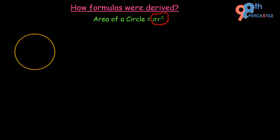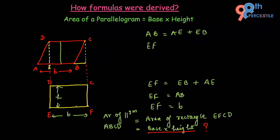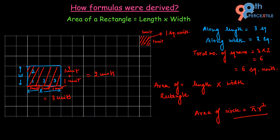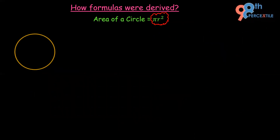So far we have understood that two-dimensional shapes can be constructed as part of some other shape by doing some simple construction. We saw that a parallelogram can be redrawn as a rectangle, and that a triangle can be drawn as a part of a parallelogram. We also saw that a rectangle can be divided into small squares.